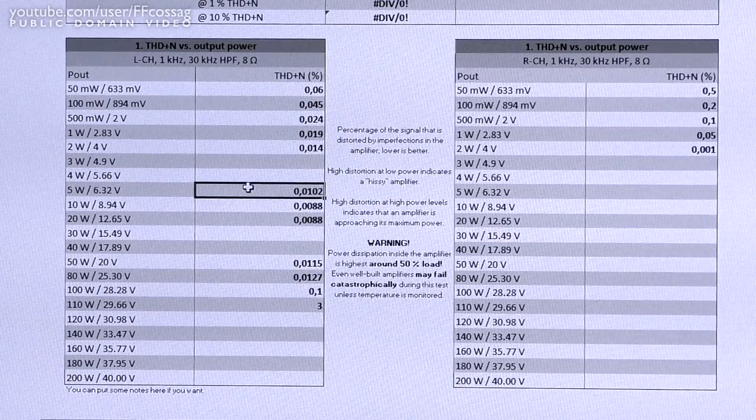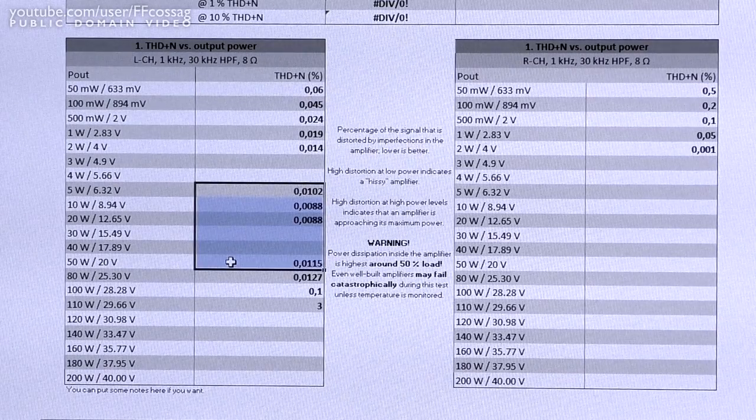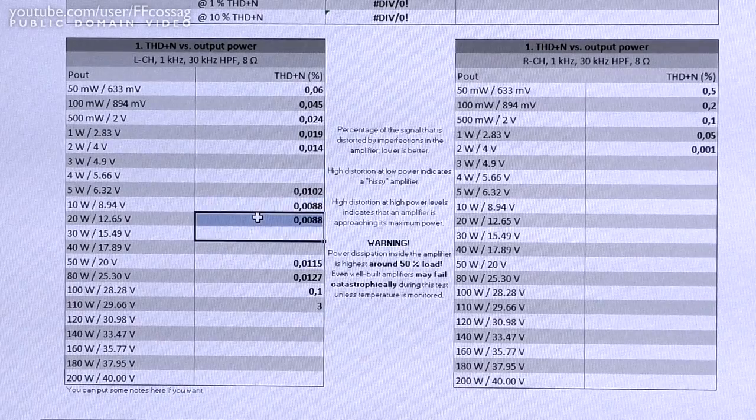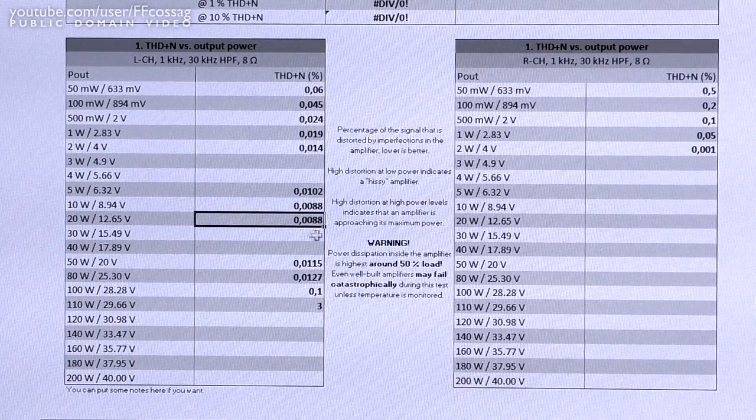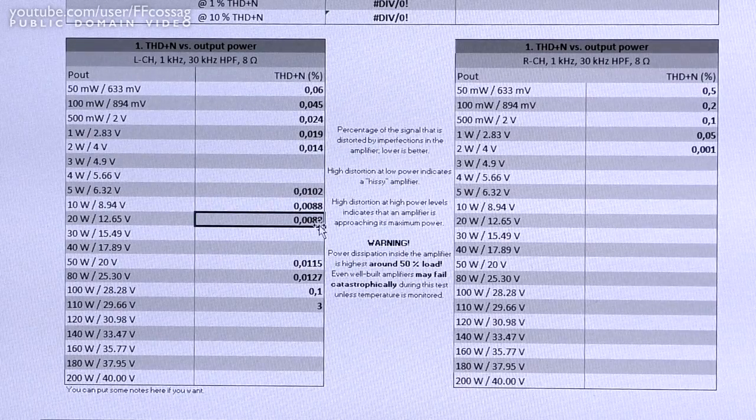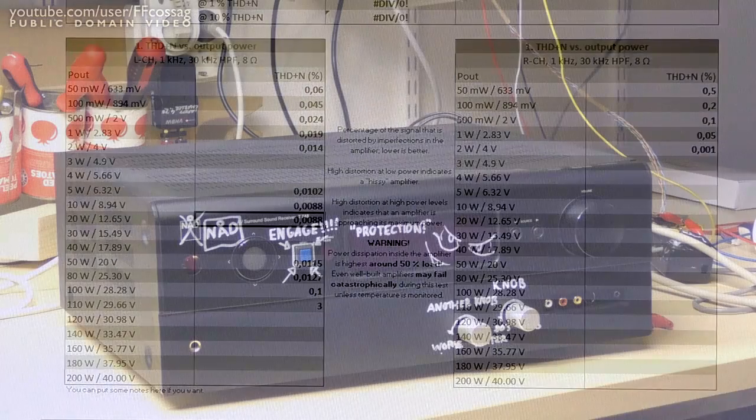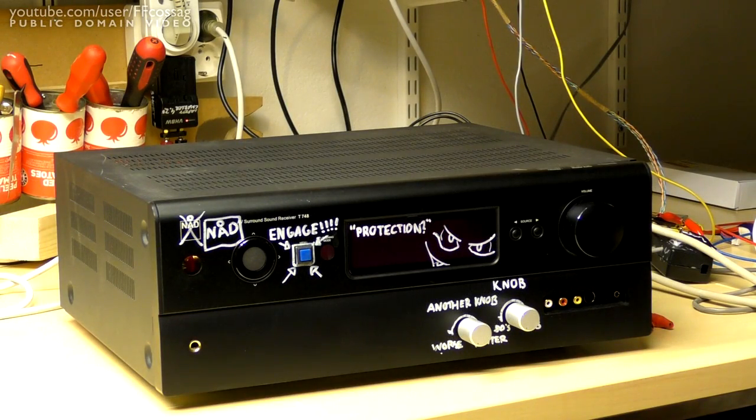And when we get to the mid powers, like 5 to 50W, it will be putting out quite clean signals. 0.0088% distortion is not bad in the slightest. So, there we have it. The performance of this NAD amplifier conversion is really not bad at all.